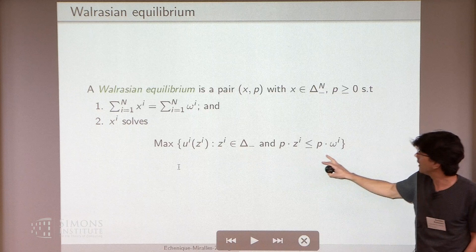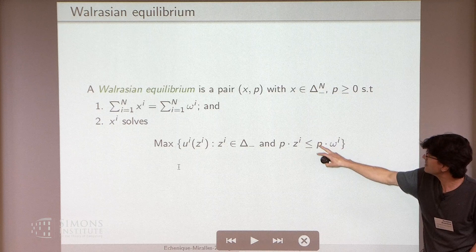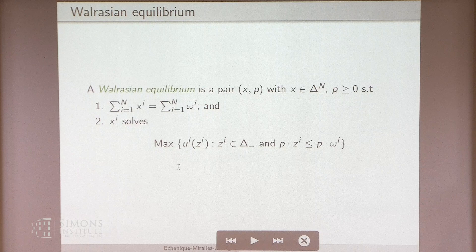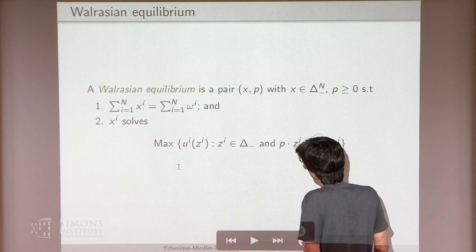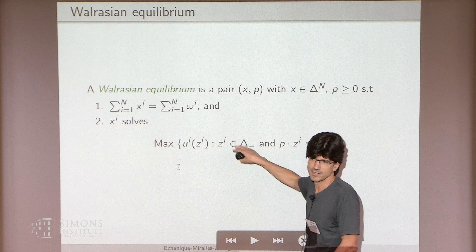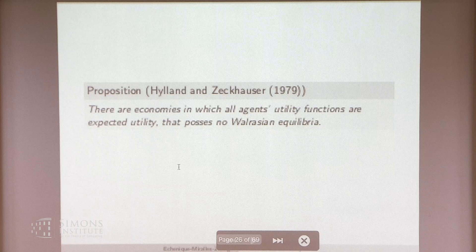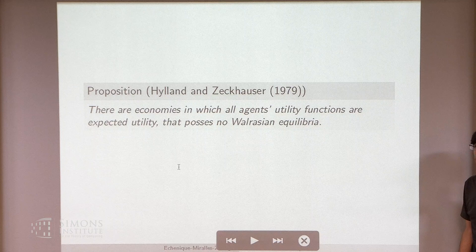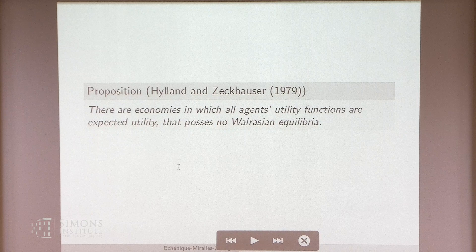The change with Hylland-Zeckhauser is that the income is endogenous — it depends on price. However, there are economies in which all agent utility functions are expected utility (so they're linear) but have no Walrasian equilibrium. This observation is not new; it's already in Hylland-Zeckhauser. So this won't allow us to get started. I have about 28 minutes. Let me quickly show you the example, because if you haven't seen it, it's really worth seeing — it's extremely simple and very illustrative.